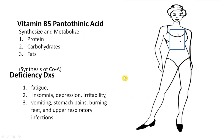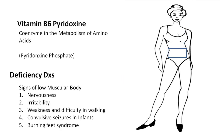Vitamin B6 is Pyridoxine. Coming down to the intestine: it is a coenzyme essential in the metabolism of amino acids — which are absorbed in the intestine. The coenzyme form is pyridoxine phosphate. Deficiency causes signs of low muscle mass, nervousness, irritability, weakness, difficulty walking, convulsive seizures in infants, and burning feet syndrome.